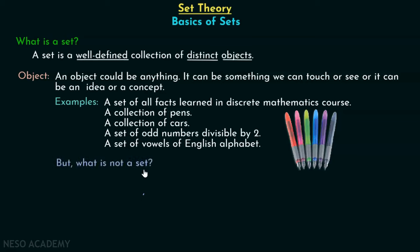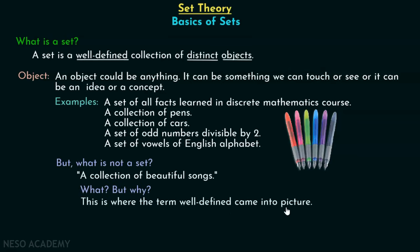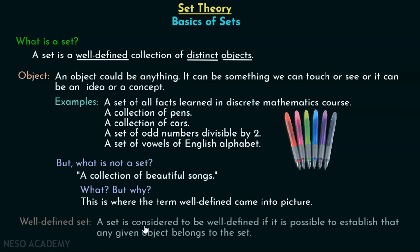But what is not a set? A collection of beautiful songs is not a set. Why? This is where the term 'well-defined' comes into the picture. In order to understand why this is not a set, we must understand the term well-defined properly. A set is considered to be well-defined if it is possible to establish that any given object belongs to the set. Let's try to understand this properly with the help of an example.